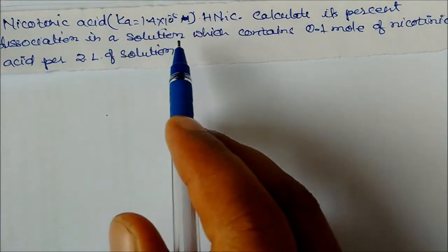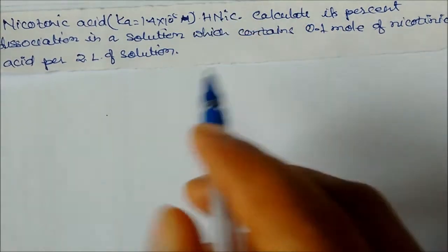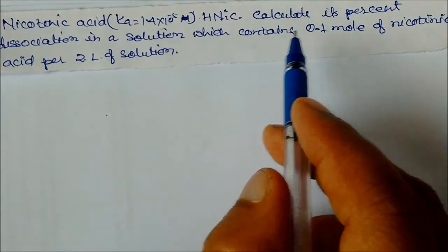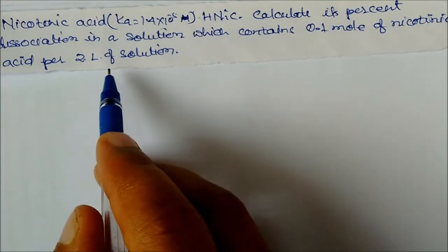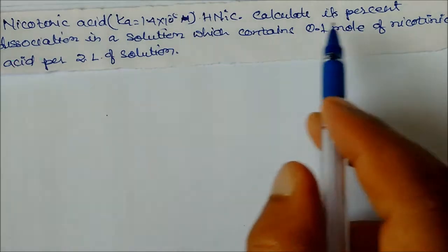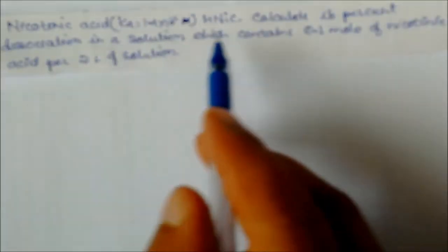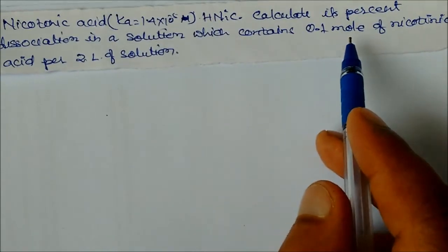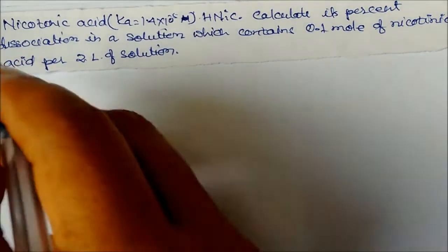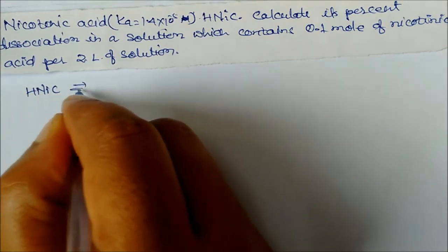Next problem: Nicotinic acid, represented as HNIC, with Ka given as 1.4×10⁻⁵. Calculate its percentage dissociation in a solution which contains 0.1 mol of nicotinic acid per 2 liters of solution. We need to find the percentage dissociation. First, write the equation for HNIC as a weak acid undergoing dissociation.